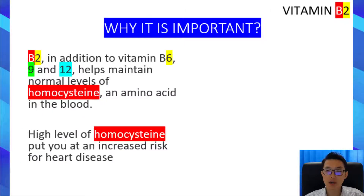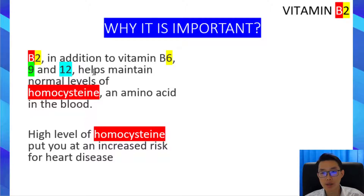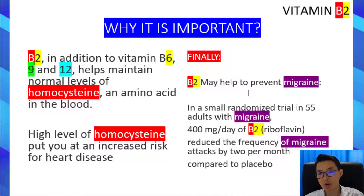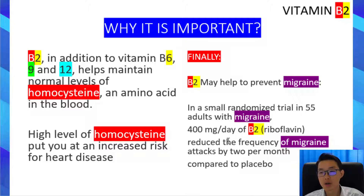The next reason why vitamin B2 is important is because, just like vitamin B6, B9, and B12, vitamin B2 plays an important role in the maintenance of a healthy level of an amino acid in the bloodstream called homocysteine. High levels of homocysteine put you at an increased risk for heart disease in the future. Finally, vitamin B2 may help to prevent migraine. In a recent small randomized controlled trial of 50 adults with migraine, supplementation with 400 mg per day of vitamin B2 or riboflavin reduced the frequency of migraine attacks by 2 per month compared to placebo.